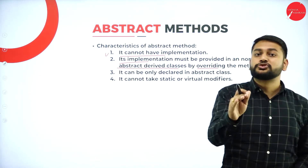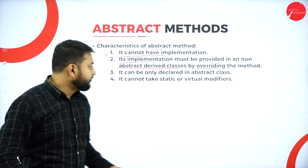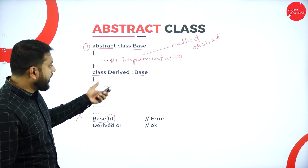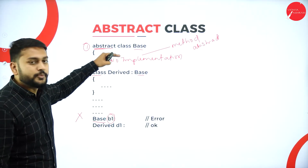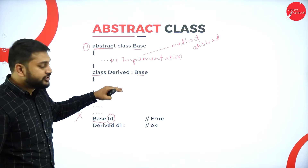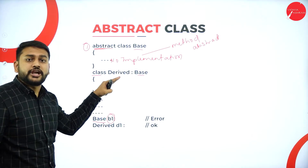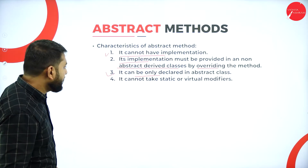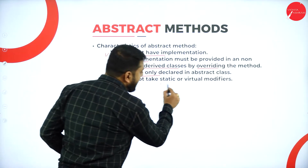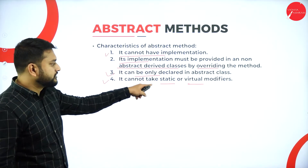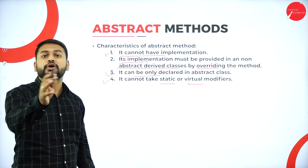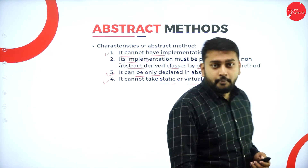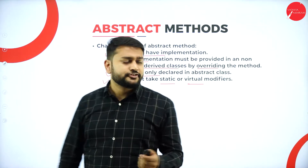An abstract method can only be declared inside an abstract class — you cannot have an abstract method in a normal class. Also, an abstract method cannot take the static or virtual modifier. You cannot use the keywords static or virtual whenever you are defining an abstract method. That is the most important point regarding abstract methods.